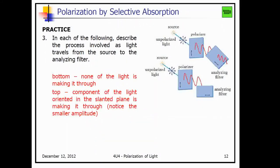In each of the following, describe the process involved as light travels from the source to the analyzing filter. We have randomly polarized light entering a polarizer, so the light is now oriented only vertically. We put it through another analyzing filter and some of the light has been absorbed, so the light is less bright or intense. In the bottom example, the light entering the polarizer is vertically oriented, then it enters the analyzer and it blocks the light altogether. So if the polarizer and the analyzer are 90 degrees different to each other, they will block all the light.